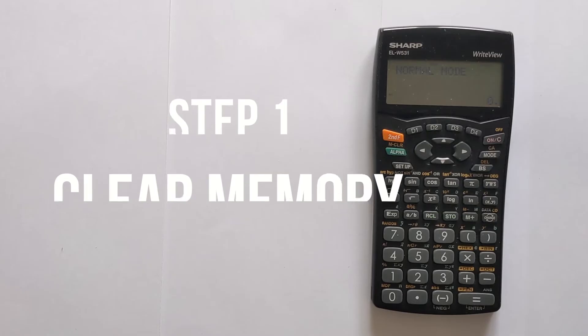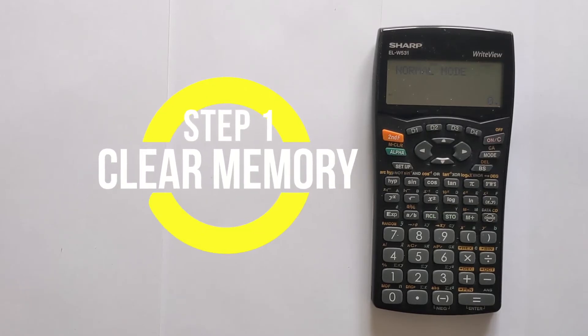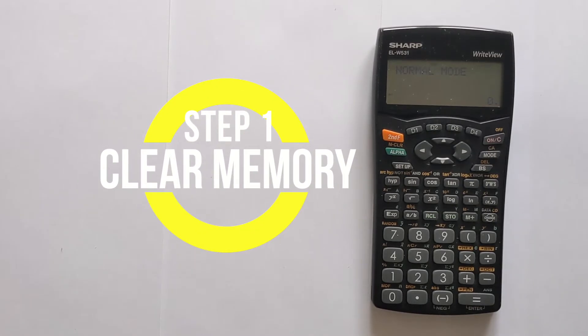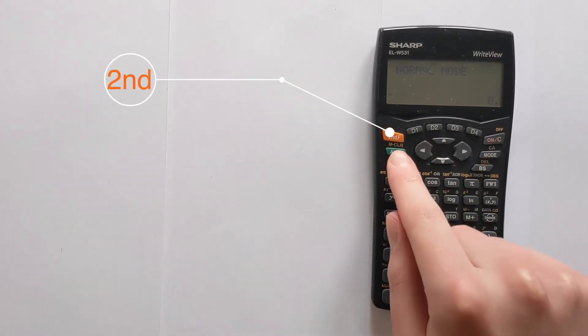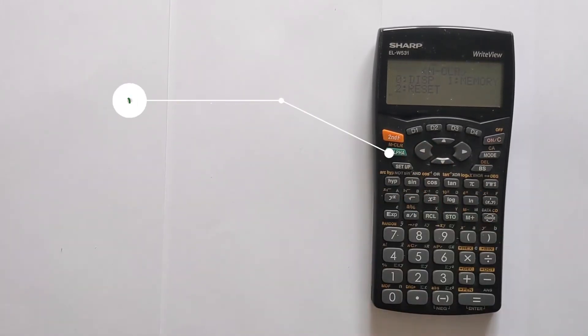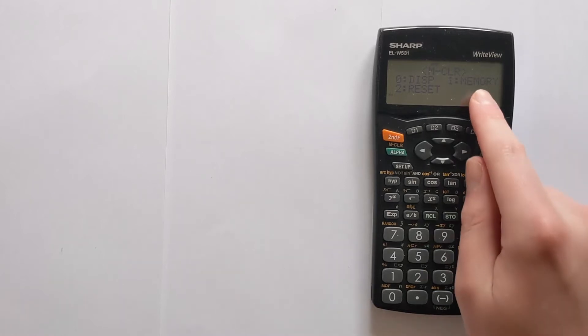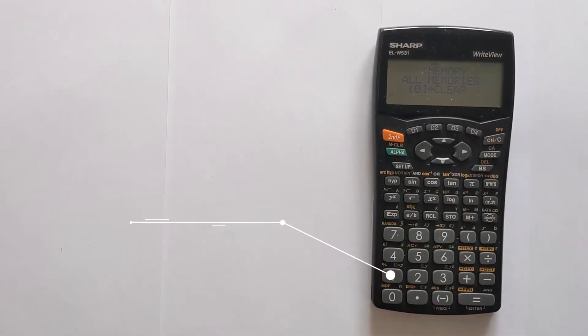The first step, and you must always remember this step otherwise you'll get the wrong answer, is to make sure you clear the memory so no previous numbers affect your current calculation. To do that you press second function, then alpha will take you to the mclear menu, then you choose number 1 for memory, and then press 0 to confirm. That has now completely wiped the memories of the calculator so no previous data will affect the current calculation.